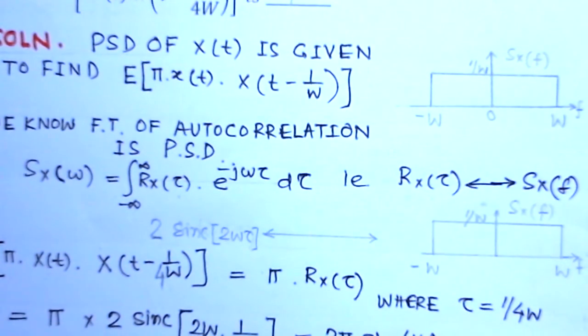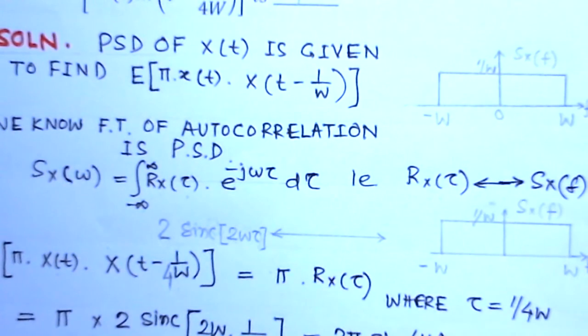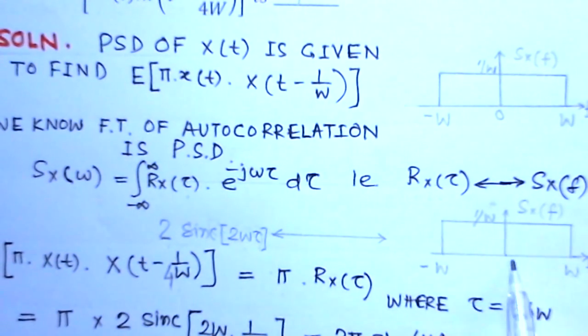Based on this, the standard relation is available between the power spectral density and the corresponding autocorrelation function. If this is the kind of power spectral density, W to minus W, 1/W with the amplitude, then corresponding autocorrelation function in time domain is 2 sinc function of 2Wτ. This is the standard relation available in textbooks for such functions.